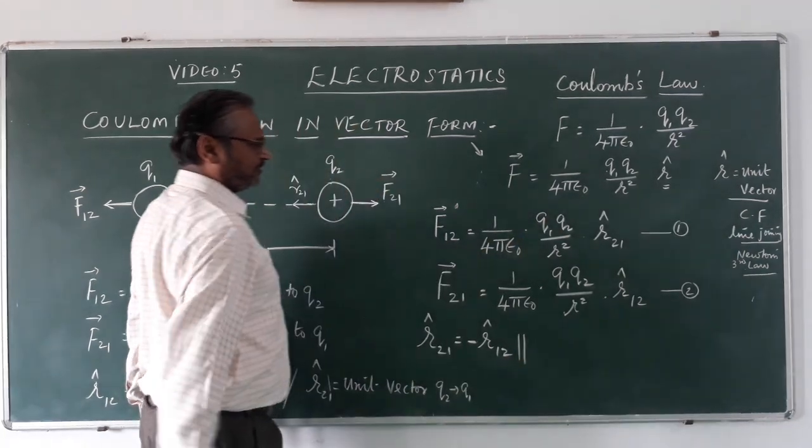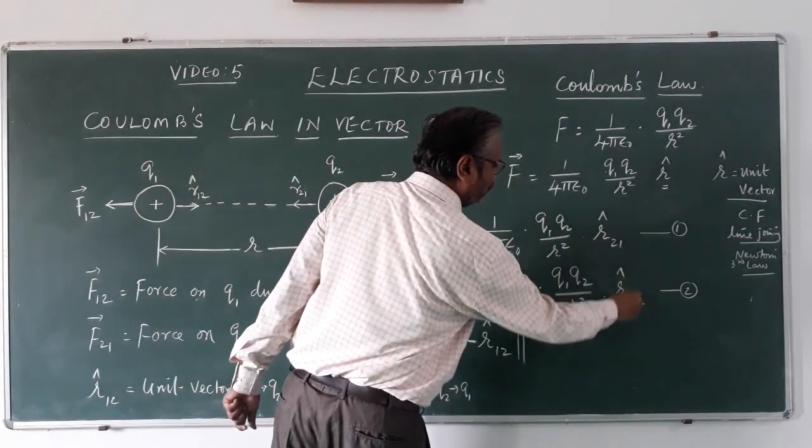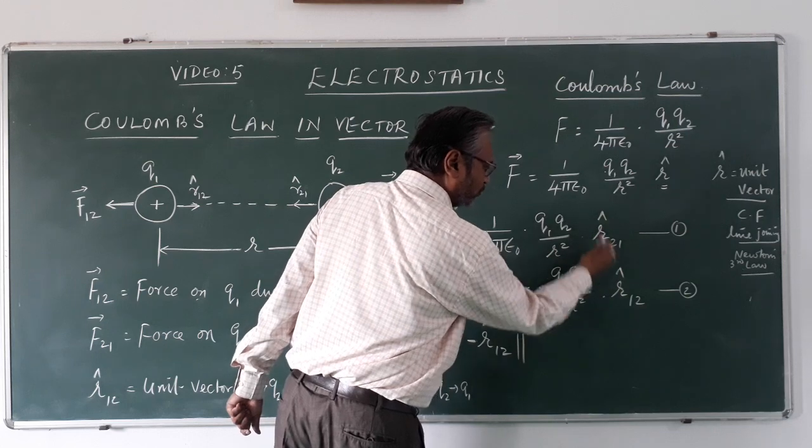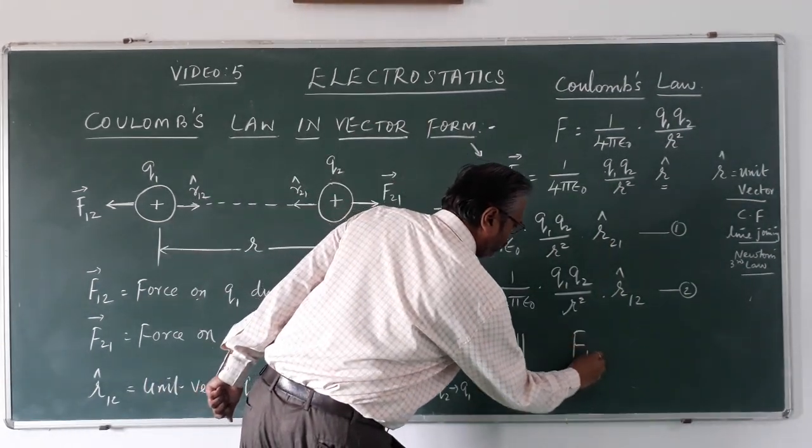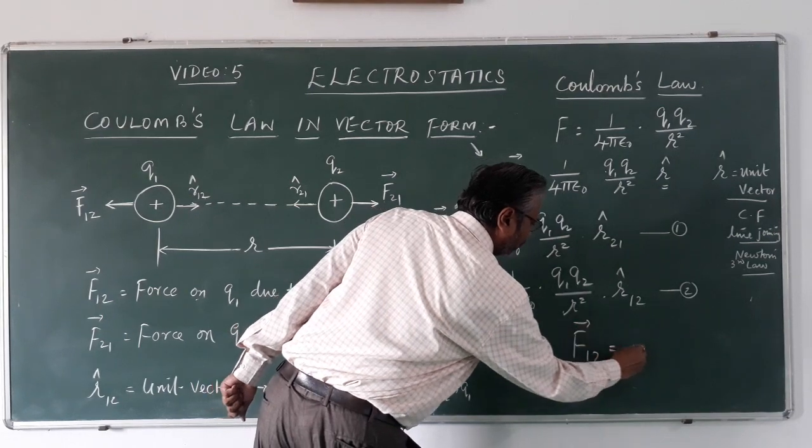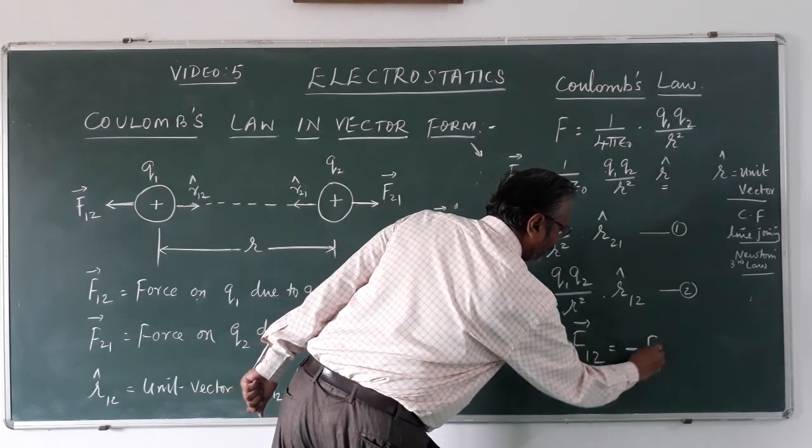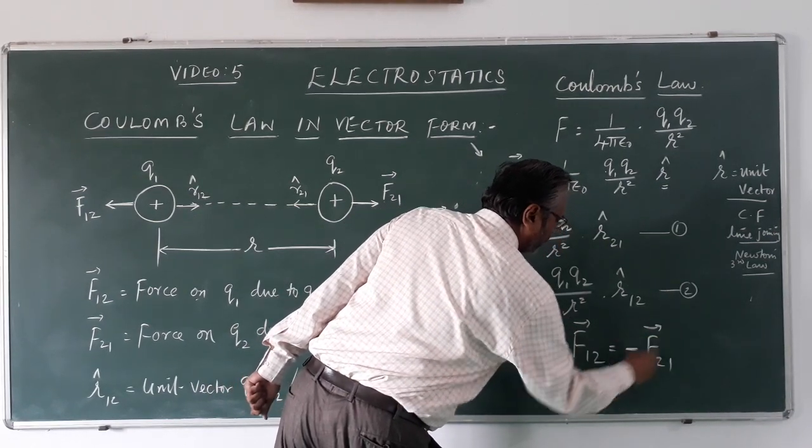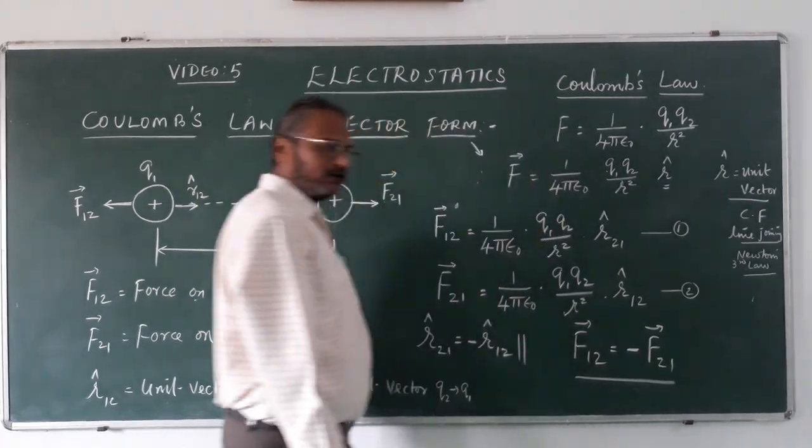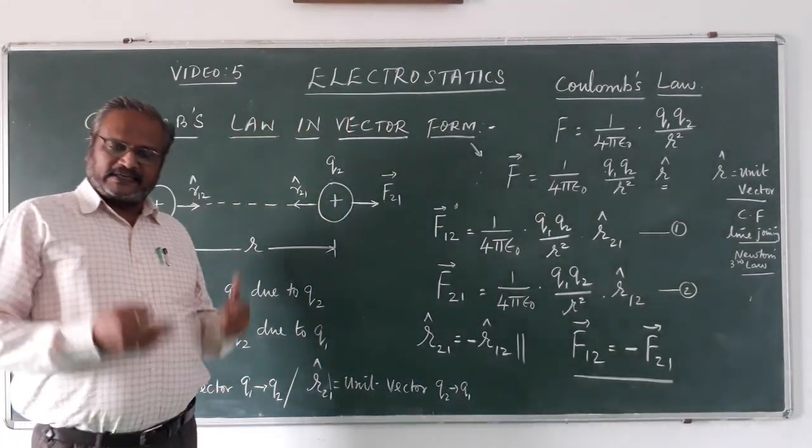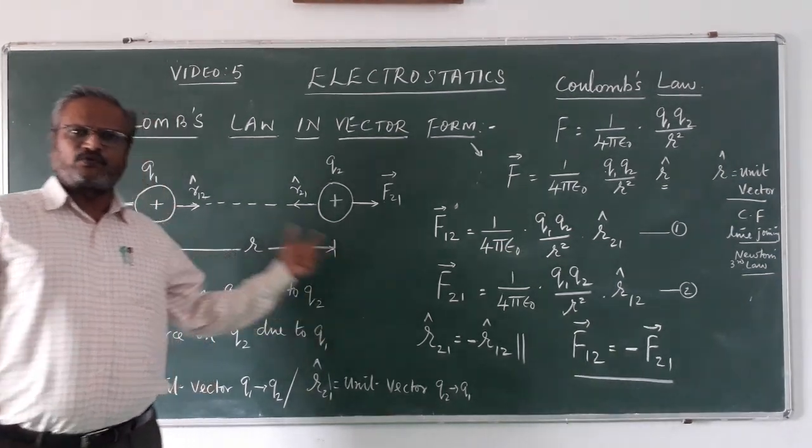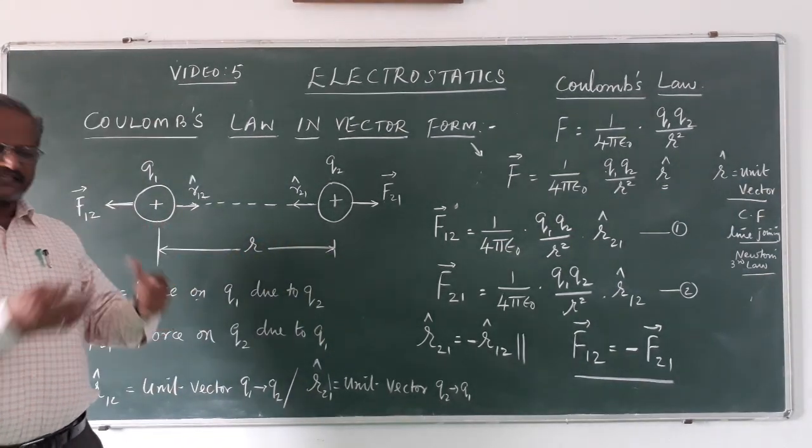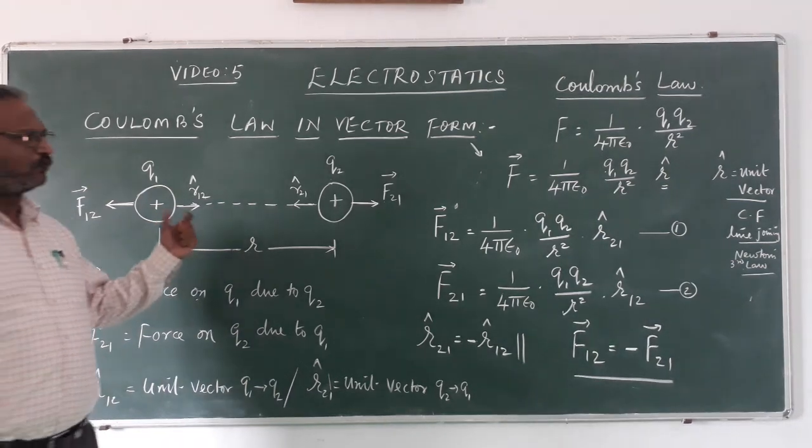If I take this condition, you will find that these two are in the opposite direction, which means that F₁₂ will be equal to minus F₂₁. So this is very important inference we take it. Because force being a vector, charges being repulsive, it obeys